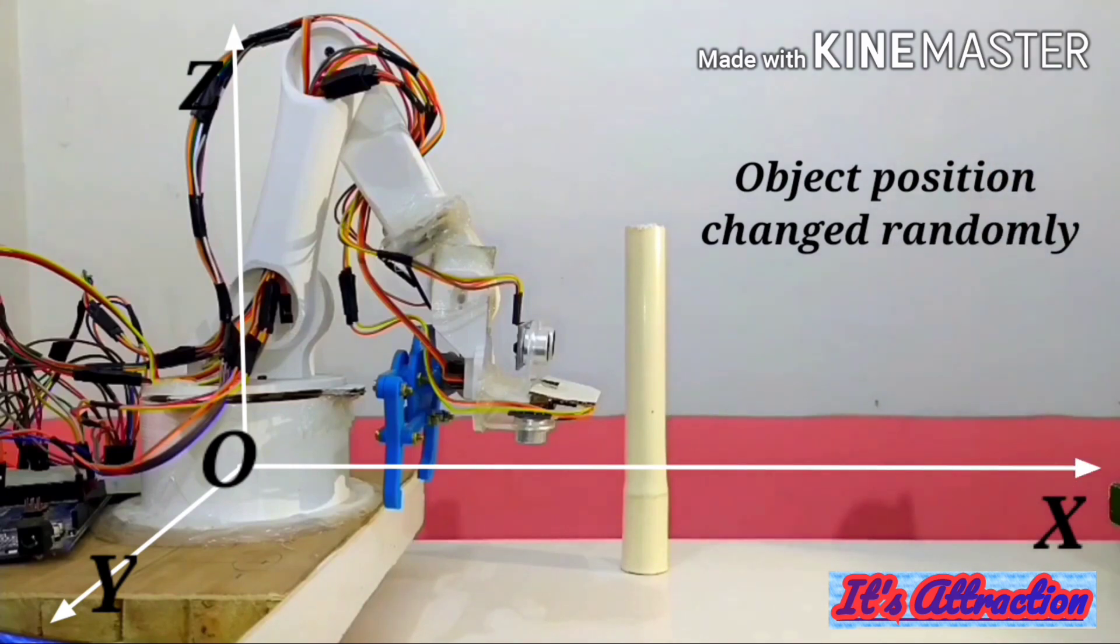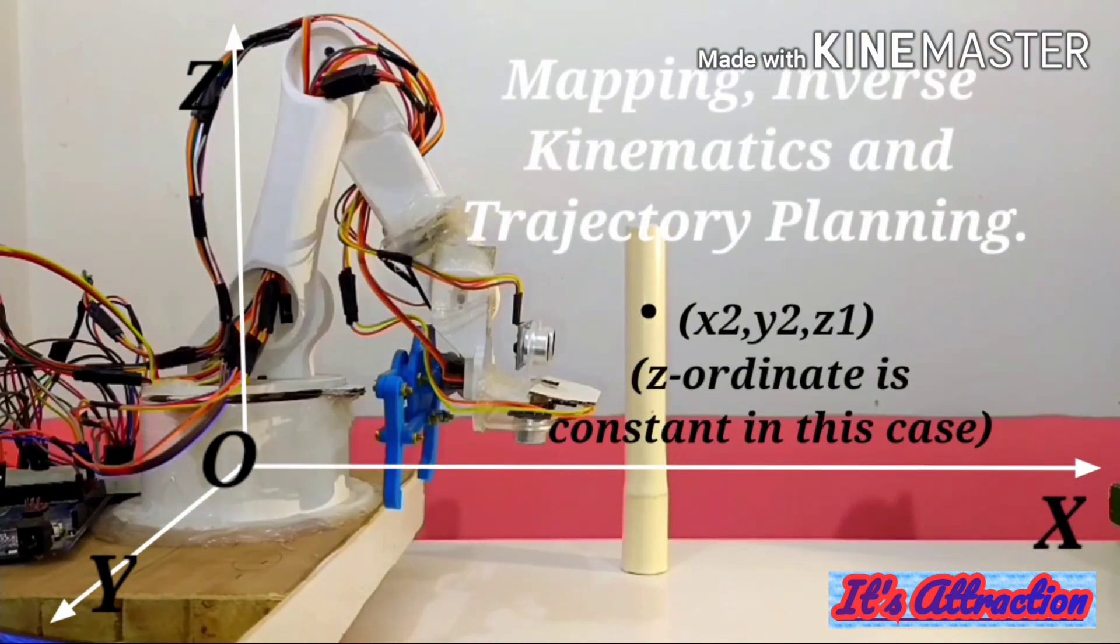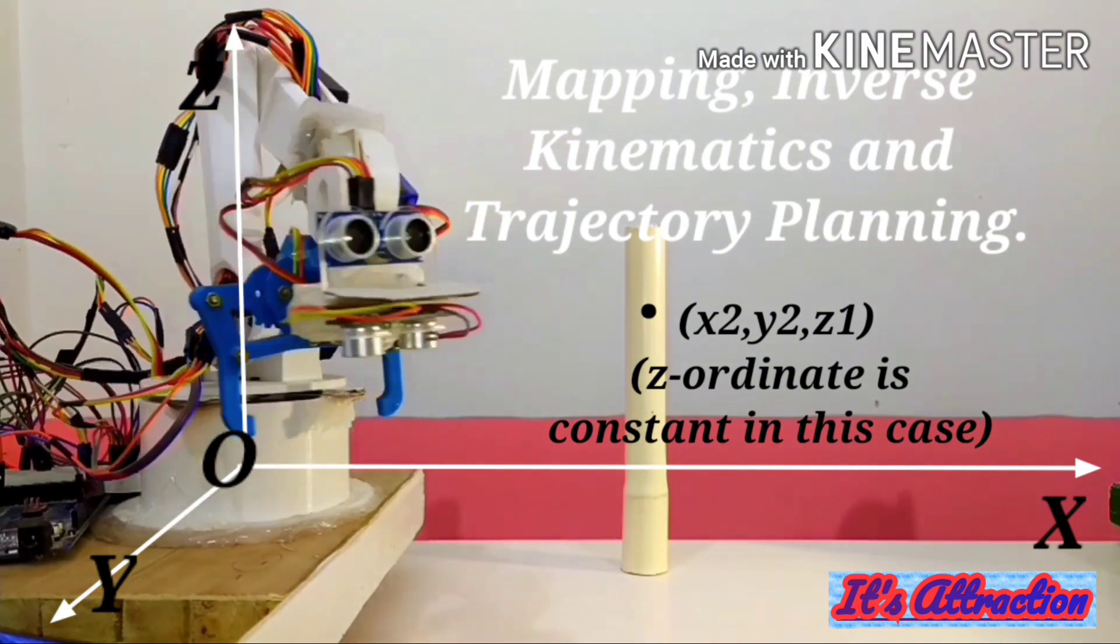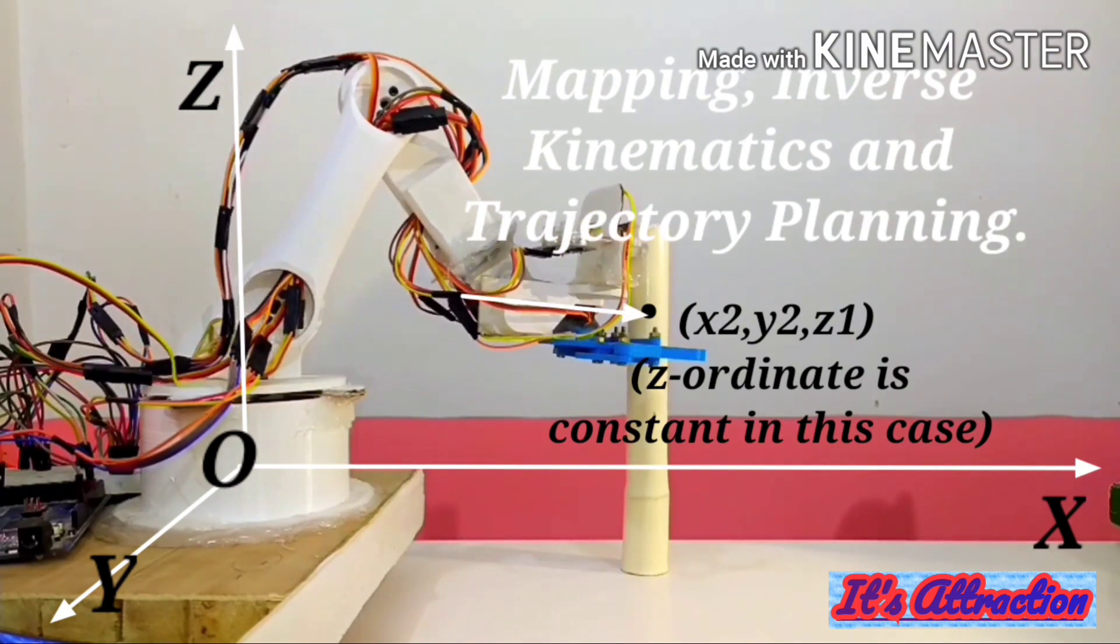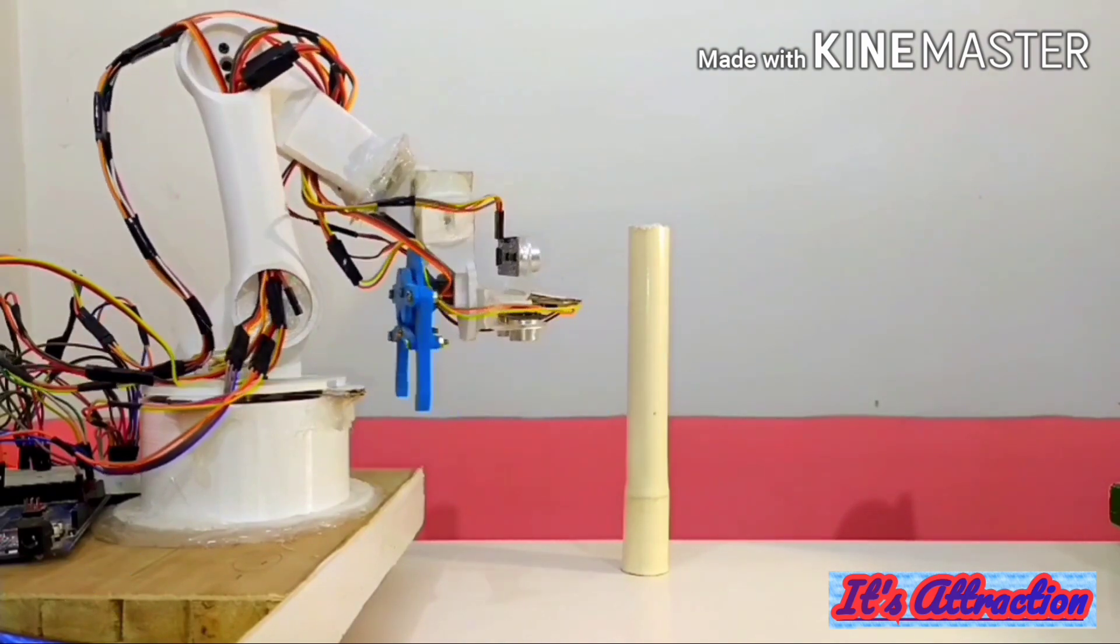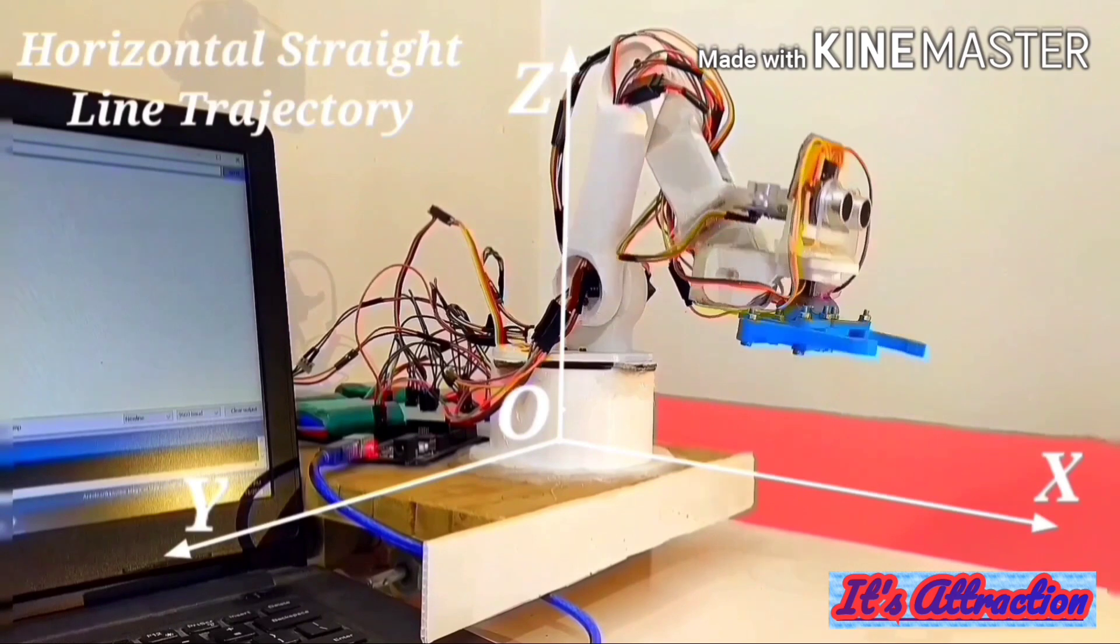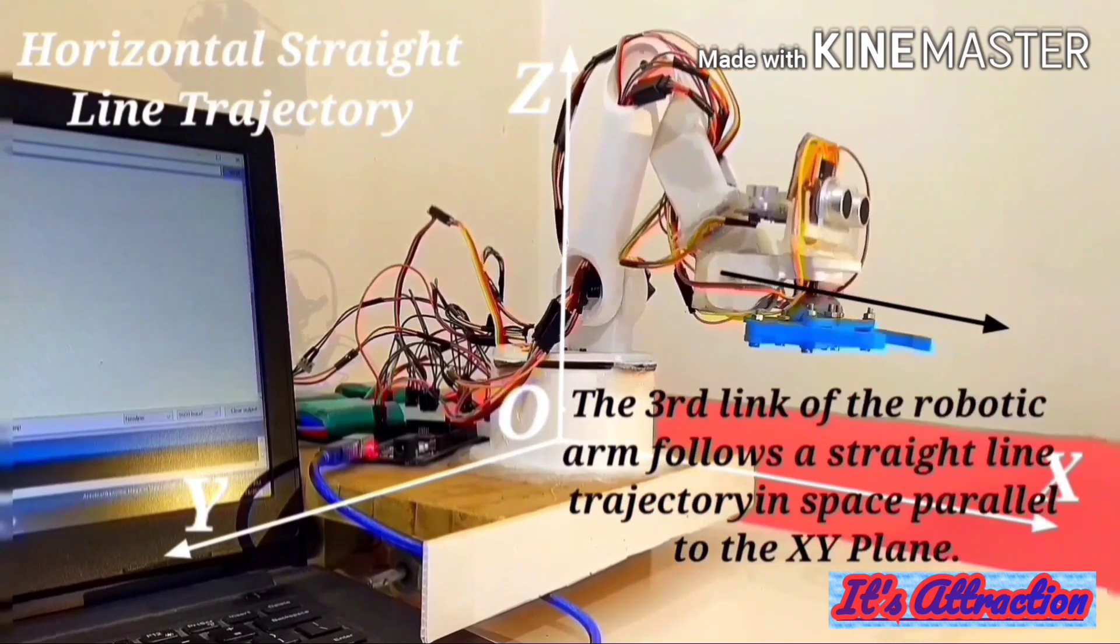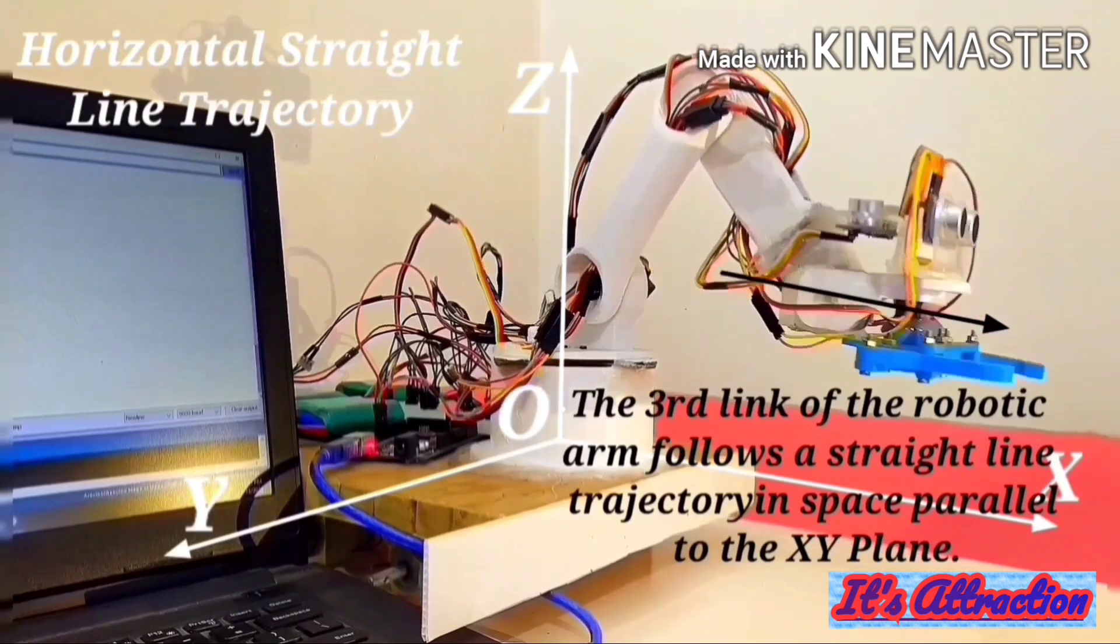Using the trajectory planning algorithm and inverse kinematics, this semi-autonomous five axis robotic arm can follow paths and specific orientations in space as specified by the user's programming. Now using the trajectory planning algorithm, the robotic arm moves in space such that the third link of the arm executes a back and forth motion along a straight line parallel to the XY plane.